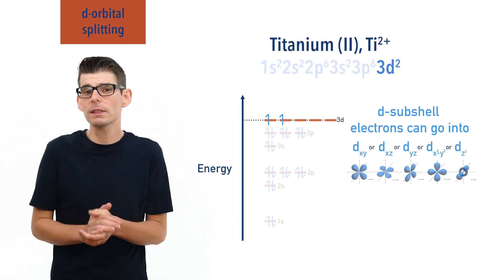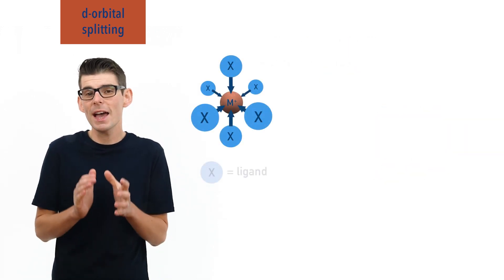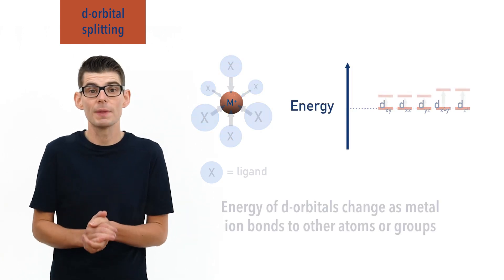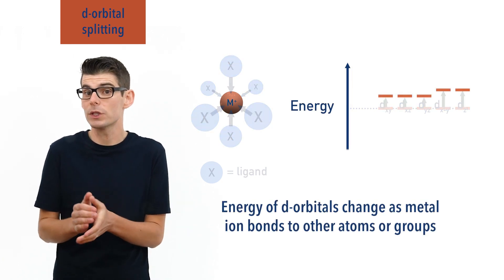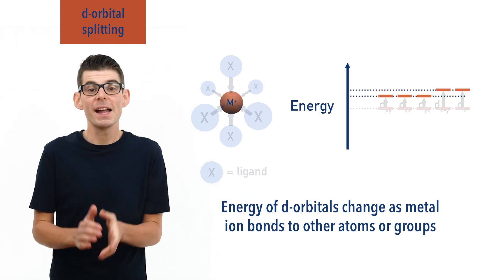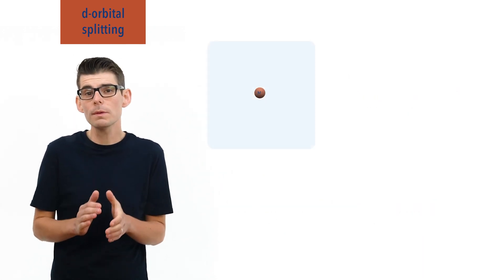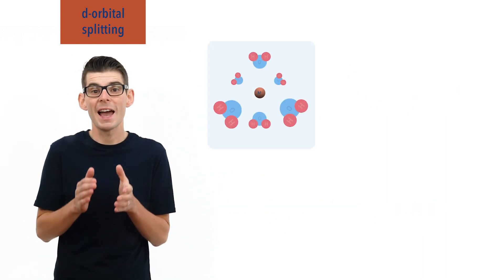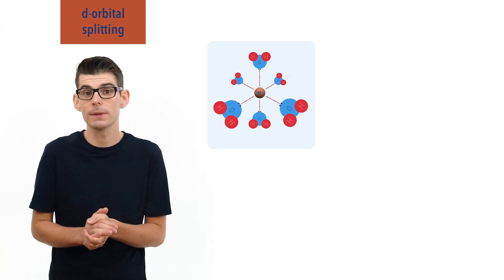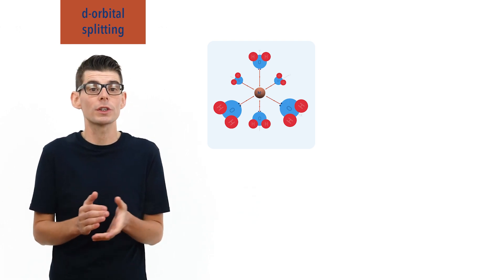If a transition metal ion forms coordinate bonds with other atoms or ions, however, the energies of specific outer D orbitals can change, leading to electrons in different D orbitals ending up with different energies. For example, if a transition metal ion is dissolved in water, water molecules surround the ion and six water molecules act as ligands and form coordinate bonds to it, forming a metal aqua complex ion with an octahedral shape.